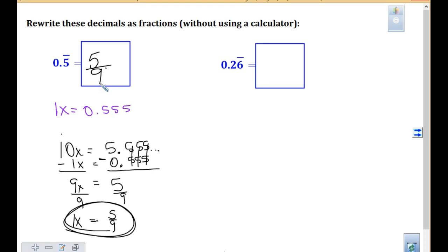Next one, you guys ready? What should I be multiplied by? 10 or 100? 10. When I multiply by 10, I'm going to have 10x equals 2.66. I'm only going to do a couple of sixes. Minus 1x. 0.26 repeating.